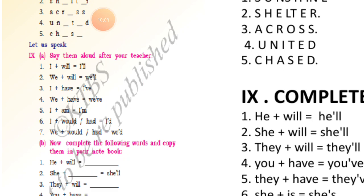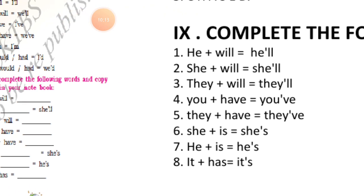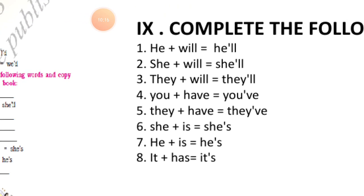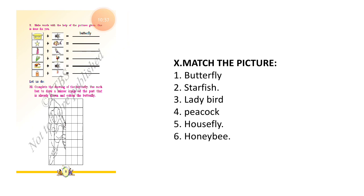Now they are asking you to complete contractions: he plus will = he'll, she plus will = she'll, they plus will = they'll, you plus have = you've, they plus have = they've, she plus is = she's, he plus is = he's, it plus has = it's.